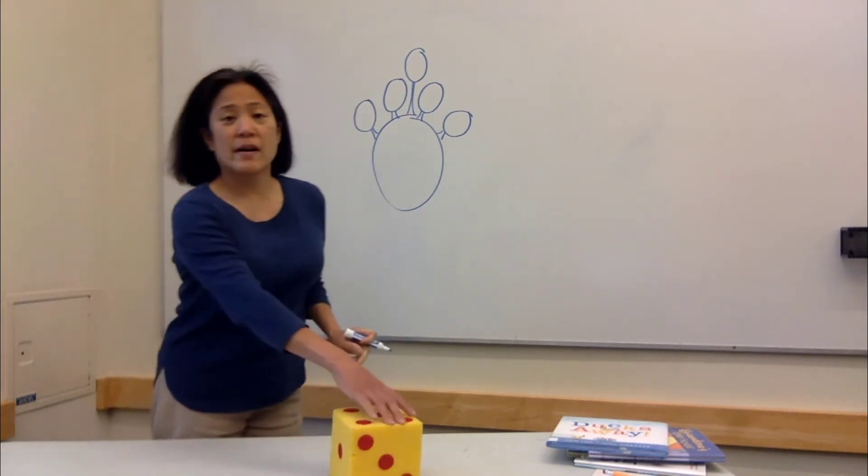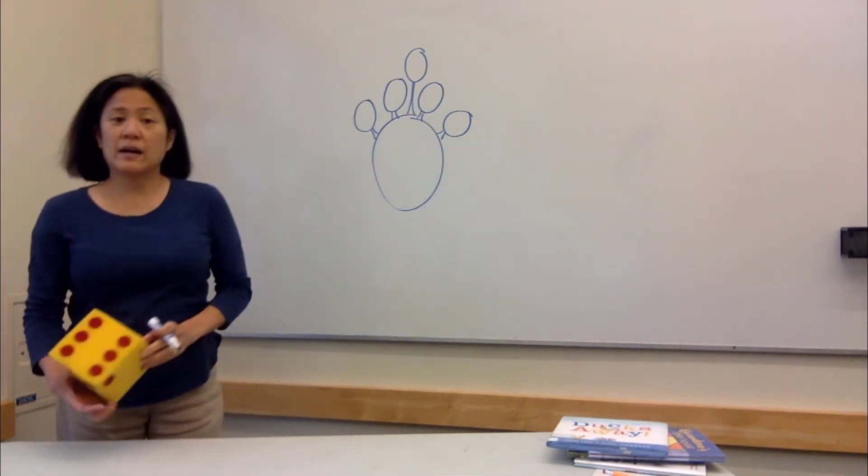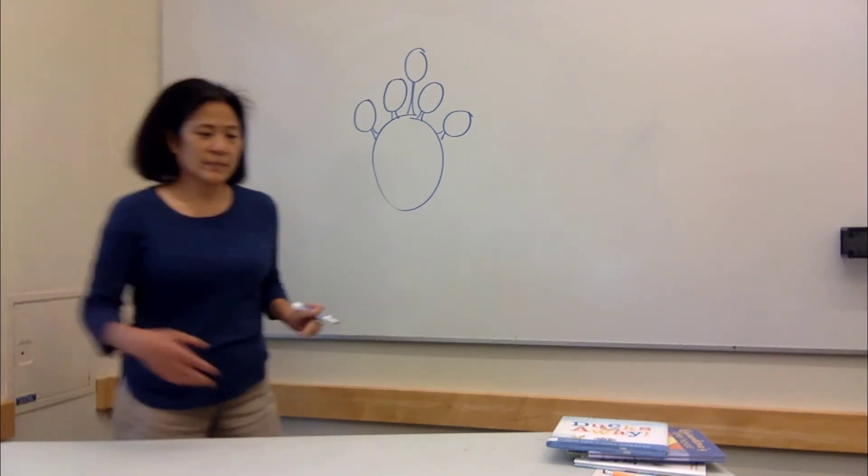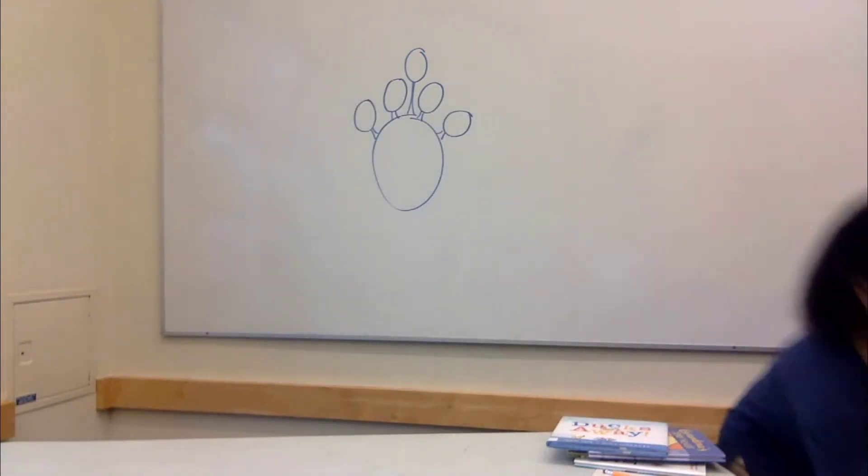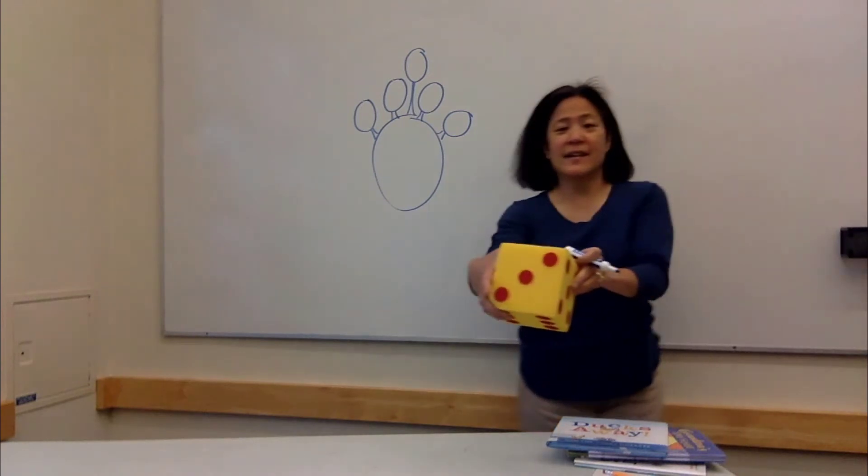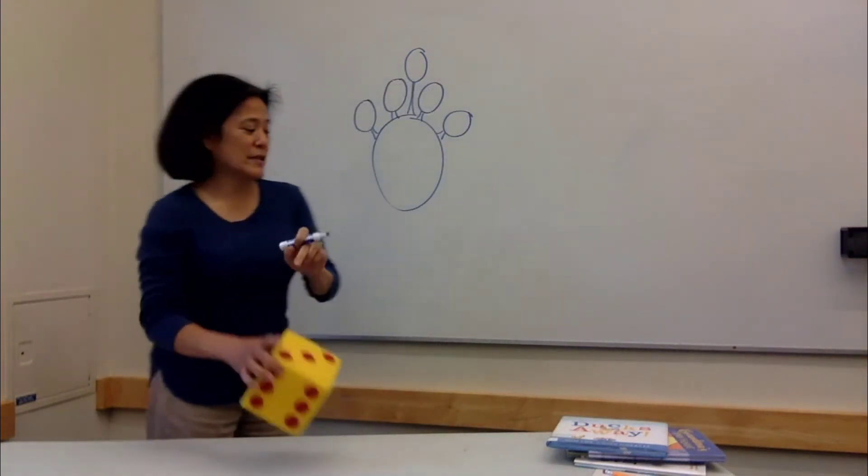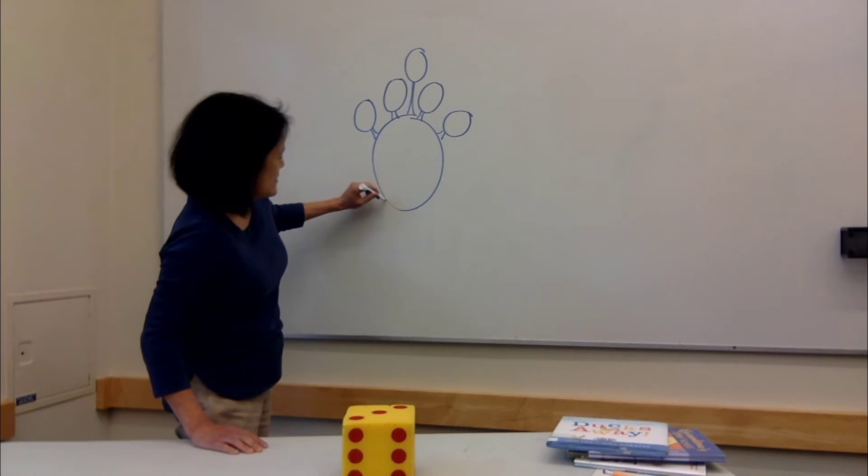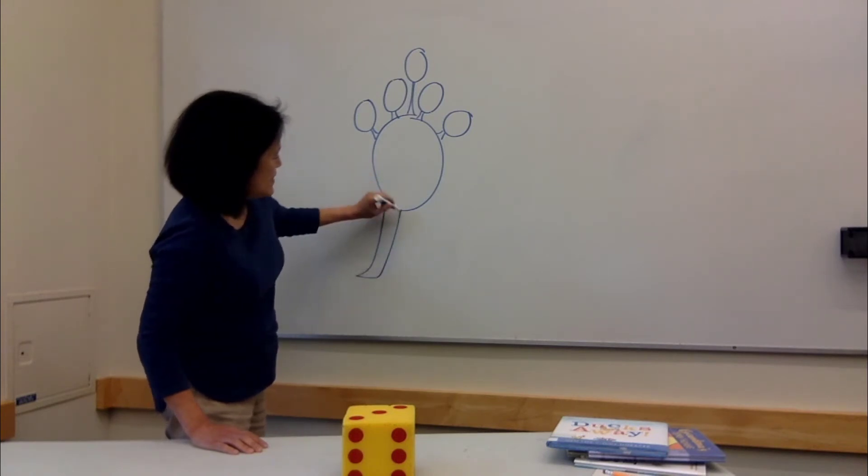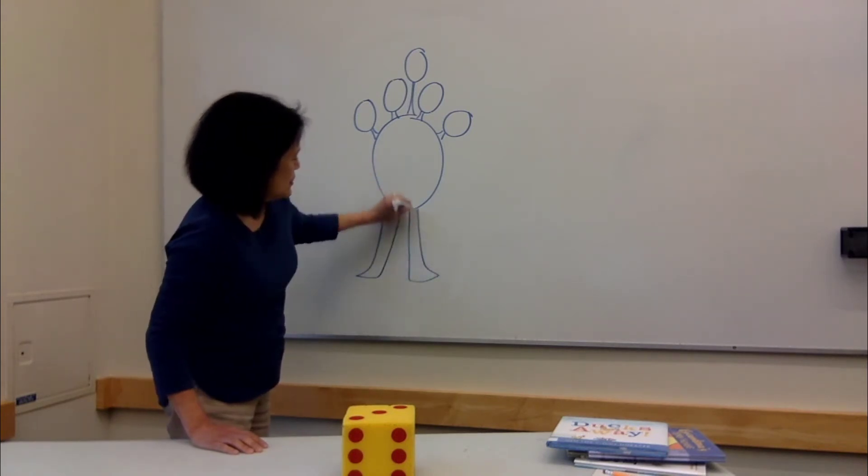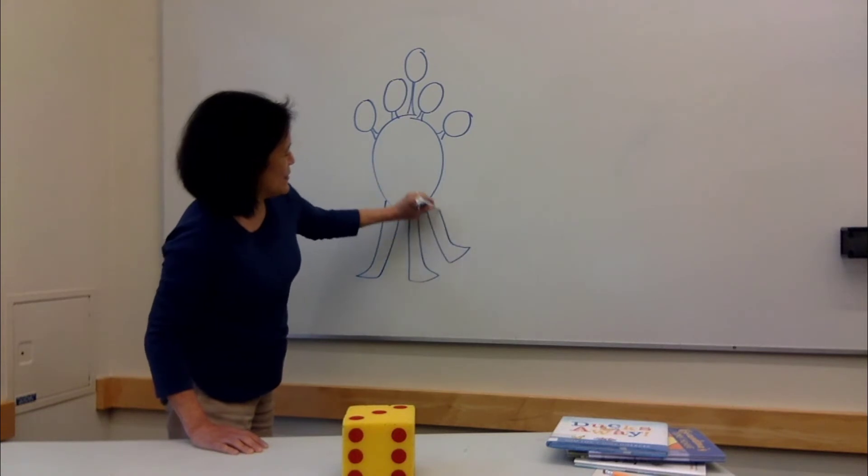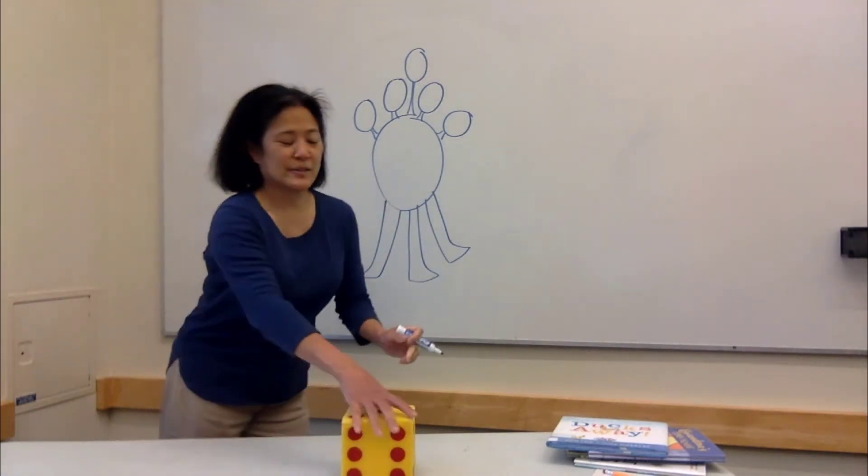And then pick another body part. We can say, how about legs? Oh, I just went off the table, but it landed on three. One, two, three, three legs. So here we go. Count with me. One, two, three. Three legs.